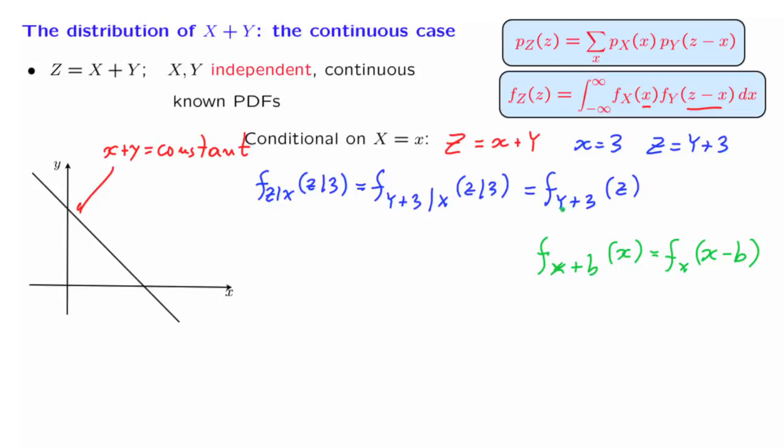Let us apply this formula to the case that we have here. We need to keep track of the different symbols. So capital Y corresponds to x, b corresponds to 3, little x corresponds to z. And by using these correspondences, what we obtain is f sub Y of this argument, which is z in our case, minus b, which is 3 in our case. And this is the final form for the conditional density of Z, given that X takes a specific value. It's nothing more than the density of Y, but shifted by 3 units to the right.